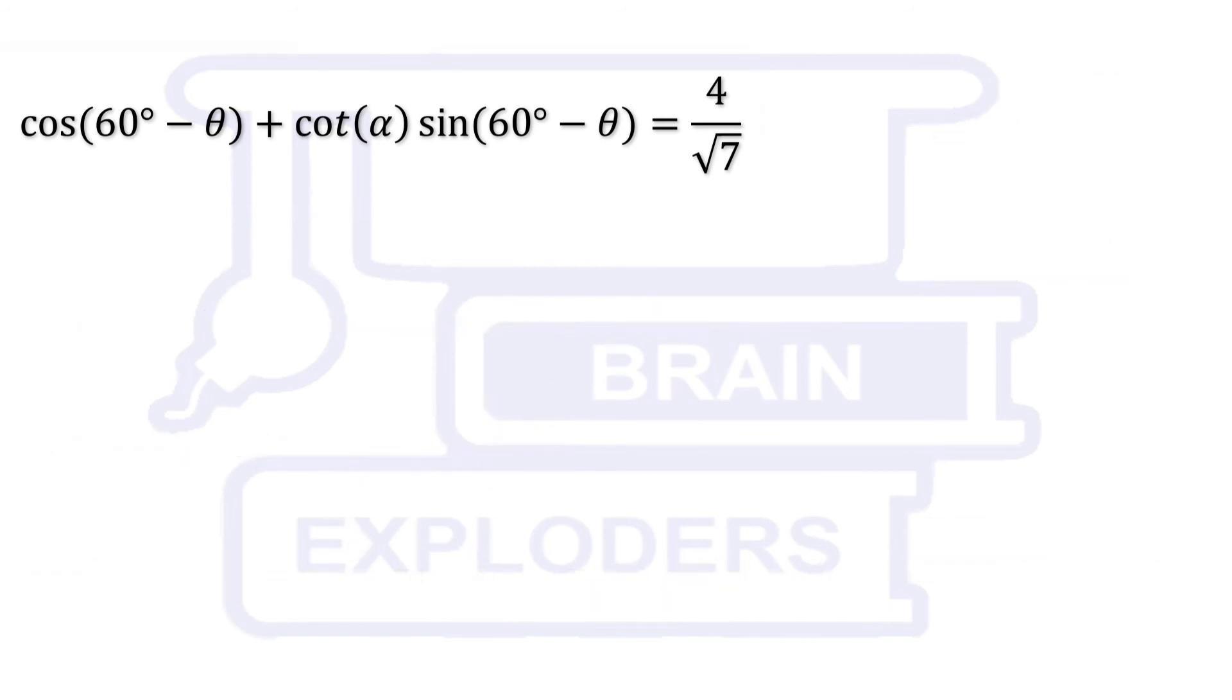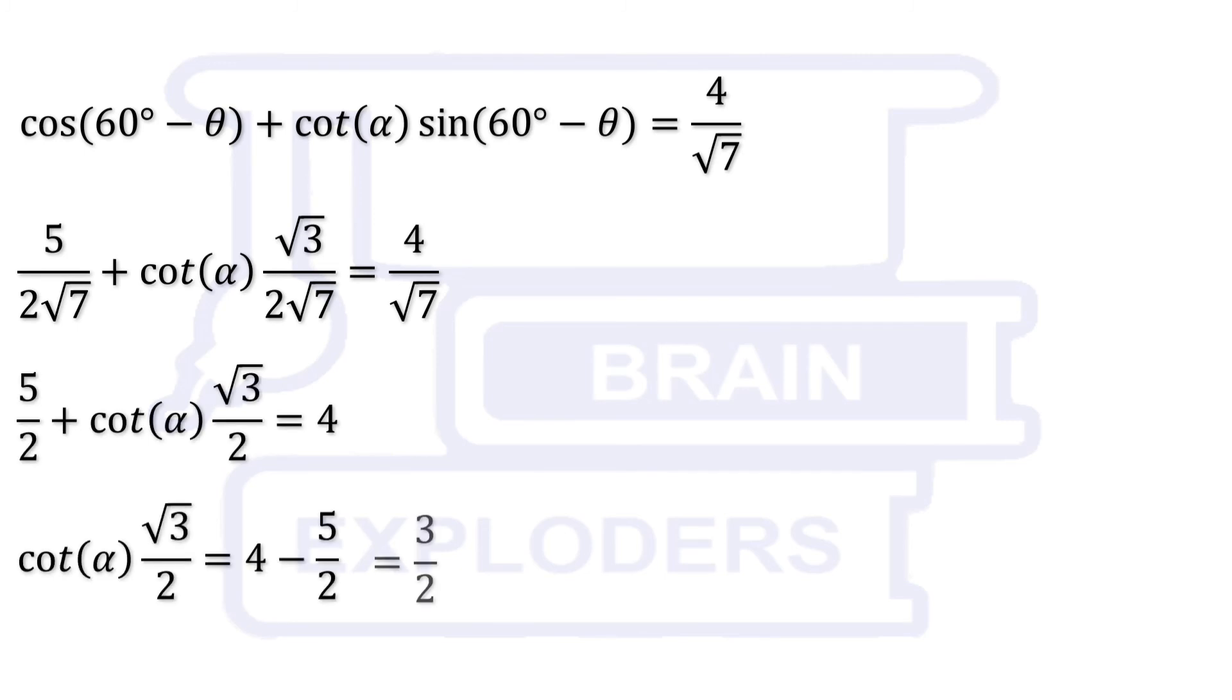Put these values and simplify. We get cot alpha equals to root 3. Since alpha is an acute angle it must be equal to 30 degrees.